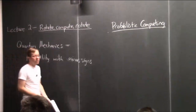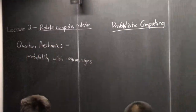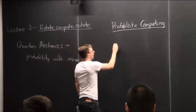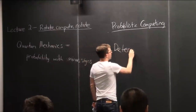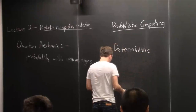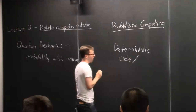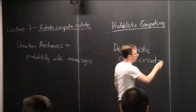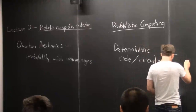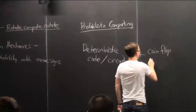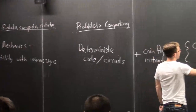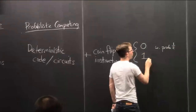In the 1970s, some computer scientists like John Gill and Janosch Simon had a fantastic and crazy idea: take classical computing but add randomness, augmented with randomness. This is a very simple extension of the model — you take deterministic computing, like code or circuits, and augment it with one instruction, which is like a new coin-flip instruction.